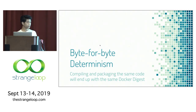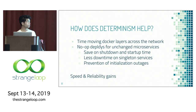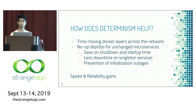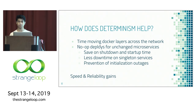Let's talk about what determinism means in this context. We're talking about byte-for-byte determinism, where you compile and package the same exact code and that should lead to the same exact Docker digest. This helps by stripping out time moving Docker layers across the network from CI systems to new servers as we auto-scale. It also enables no-op deploys for unchanged microservices, which saves on shutdown and startup time, and reduces downtime on singleton services, preventing initialization outages when talking to the EC2 metadata service, config system, or secret system.